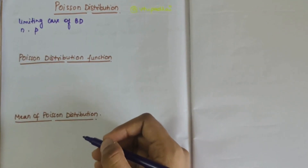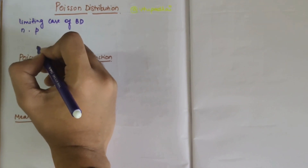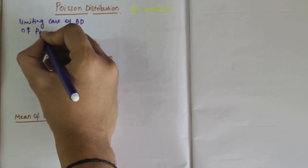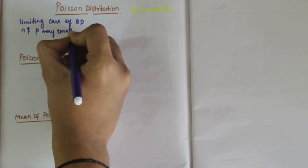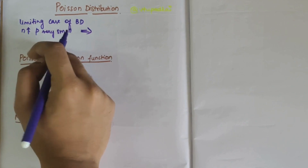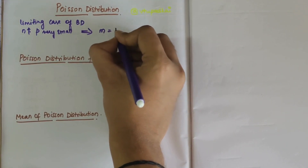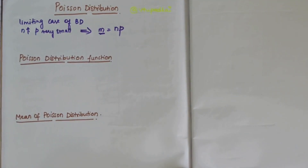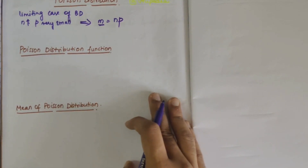Here, n is the number of trials and p is the probability of success. The n value is very large and p is very small, such that their product n·p tends to m, where m is a constant. Now let's move on to the Poisson distribution function.